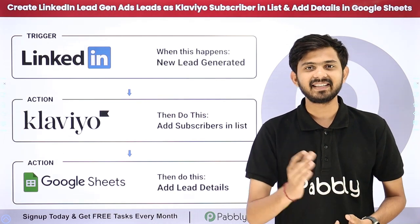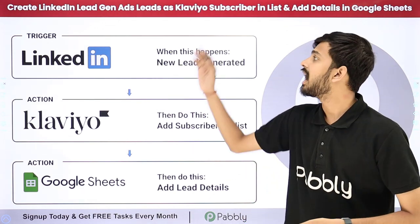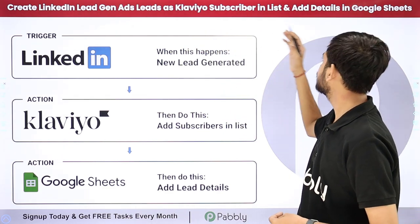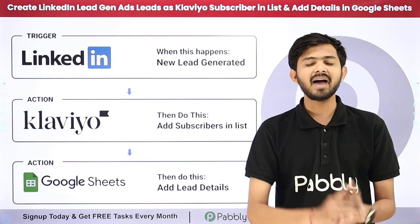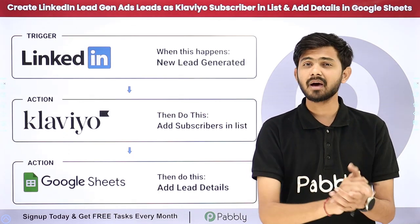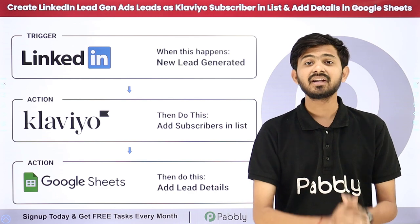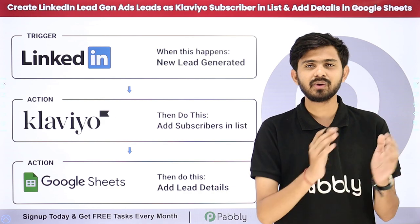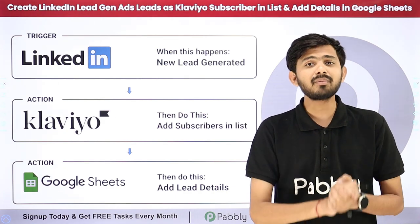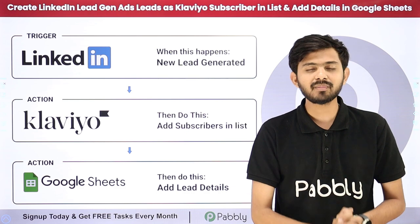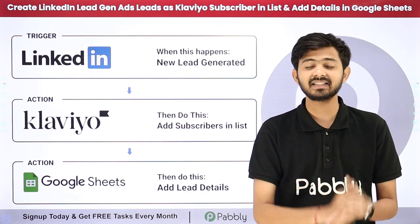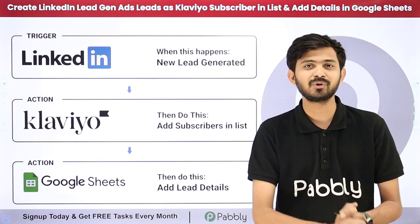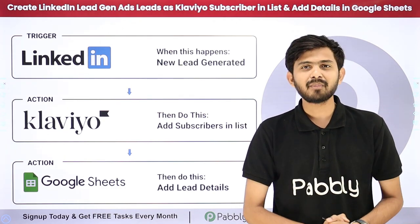Welcome back to Pabbly. Today our topic is how to create LinkedIn Lead Gen Ads leads as Klaviyo subscribers in a list and add details in Google Sheets. I'm running a digital marketing agency and running ad campaigns for clients on LinkedIn Lead Gen Ads. When I receive a new lead, I want to automatically create a new subscriber in a Klaviyo list and add all the lead details in Google Sheets.